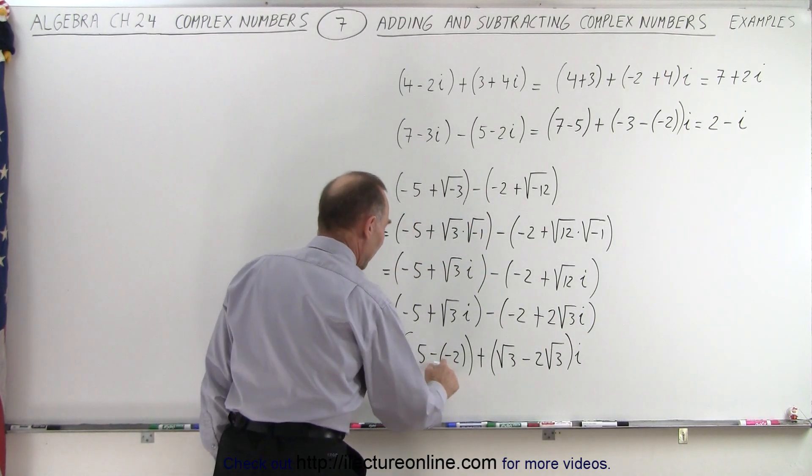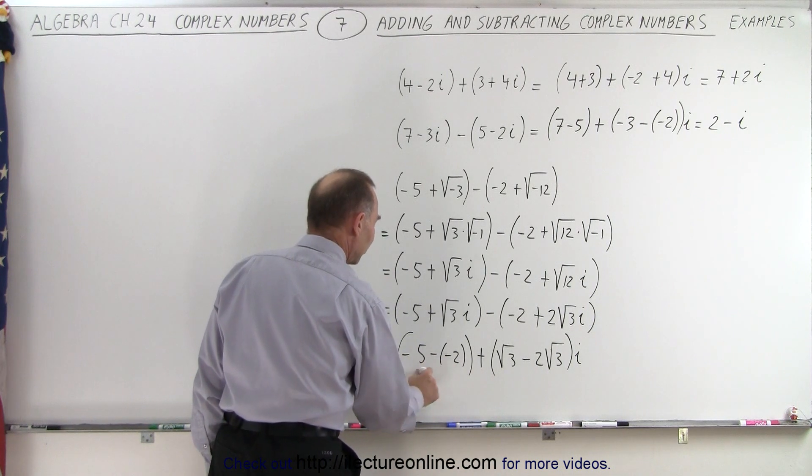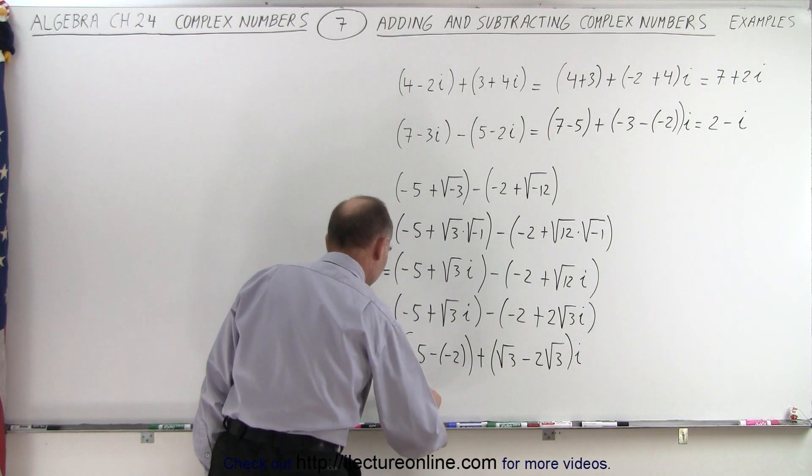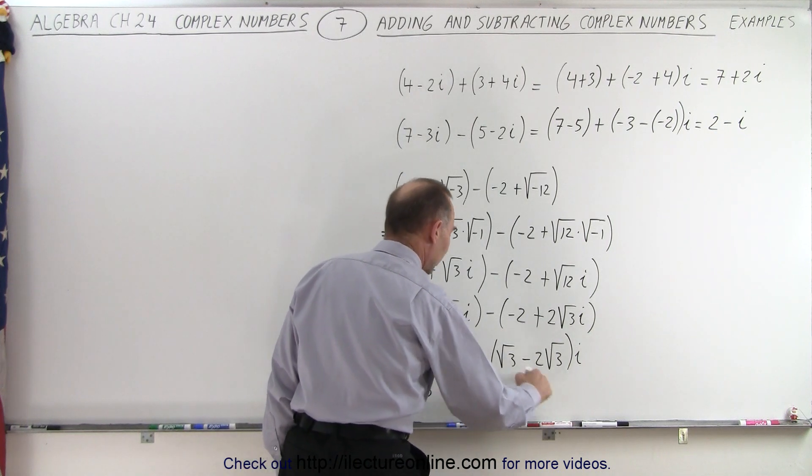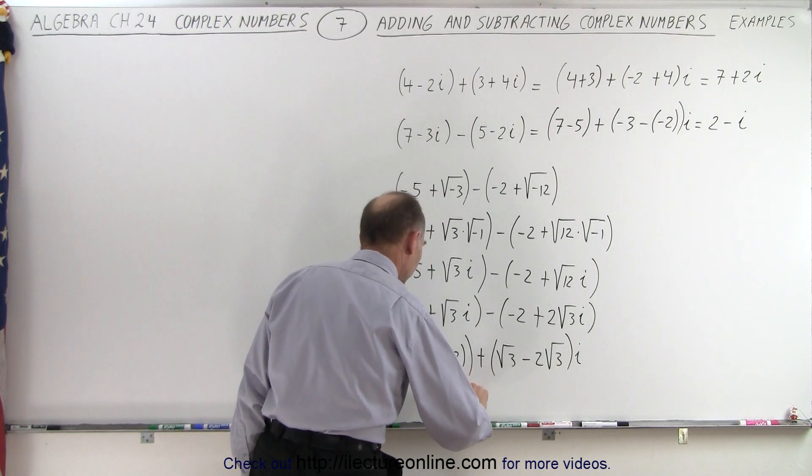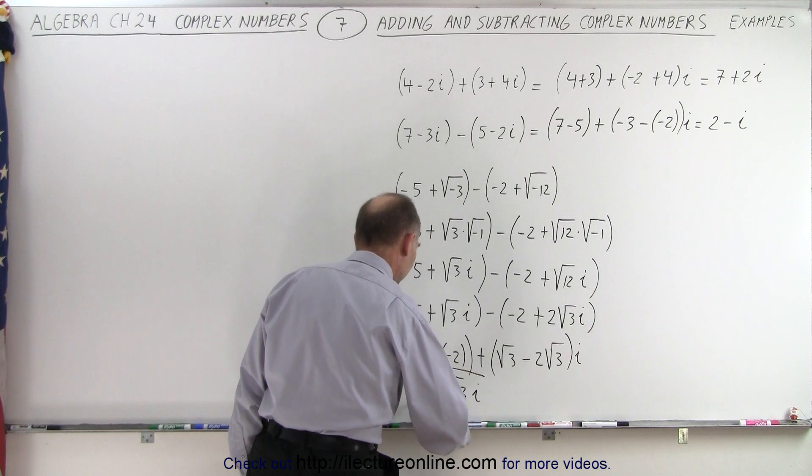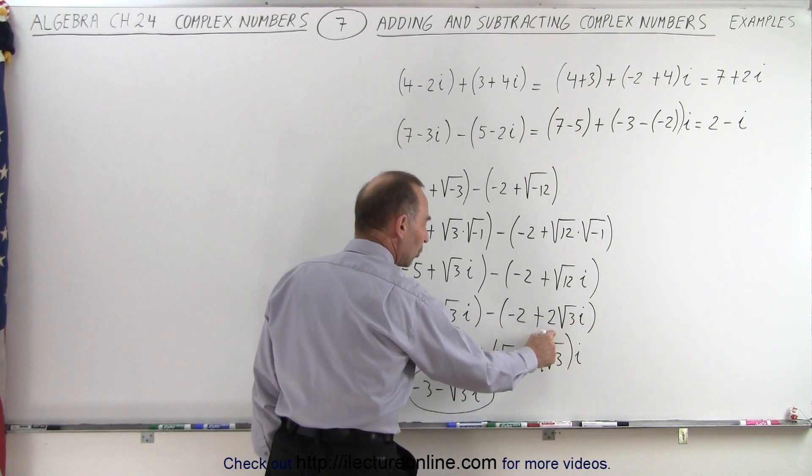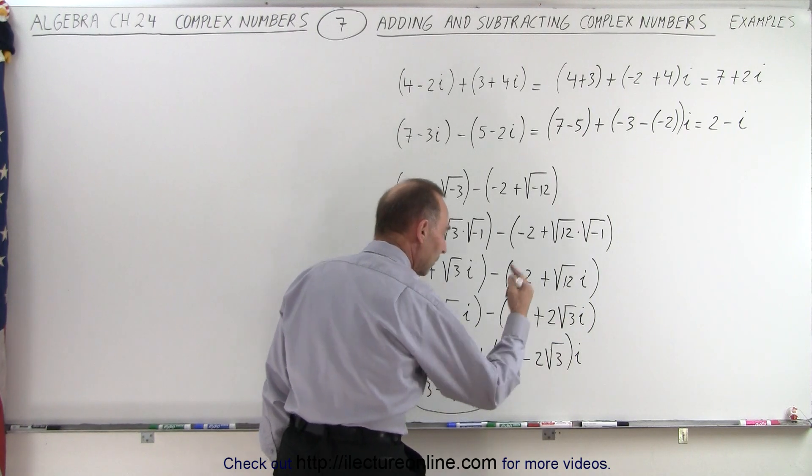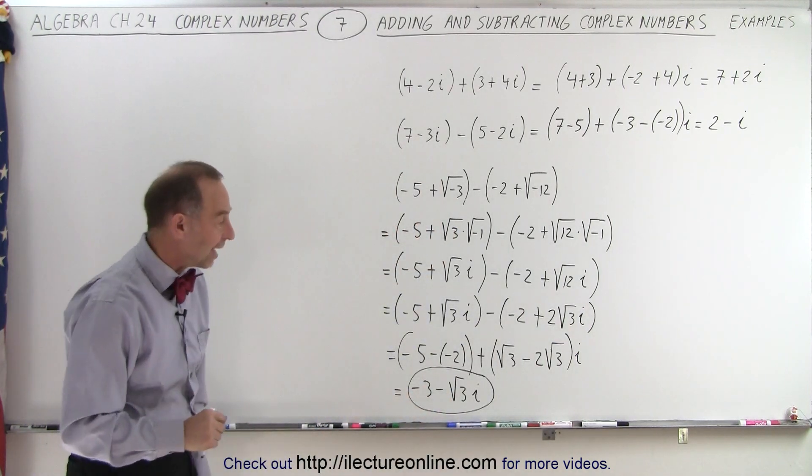And then you can see that a minus times the minus makes that a plus. So minus 5 plus 2, that's equal to negative 3. And then here we have the square root of 3 minus 2 times the square root of 3 would be minus the square root of the 3 times i. So it's actually a good thing that we simplify the square root of 12 to twice the square root of 3 because then we can combine the radicals together like that. But that is the final answer and that is how it's done.